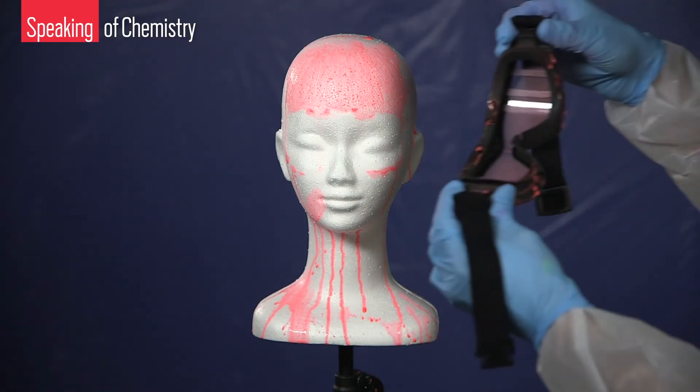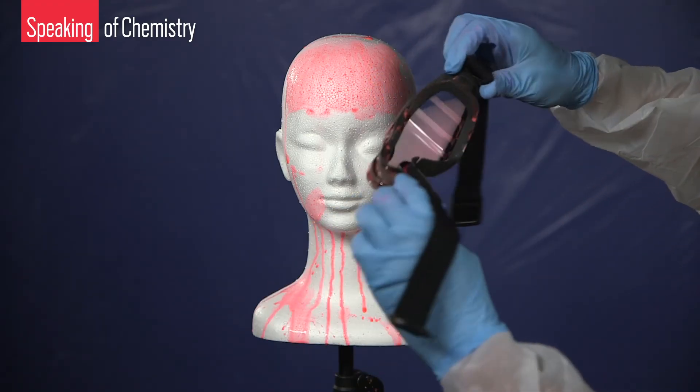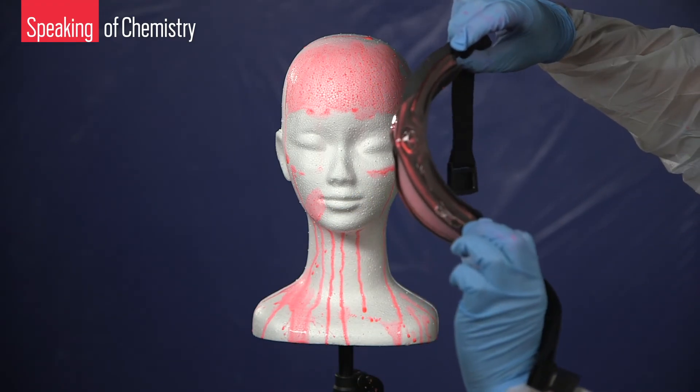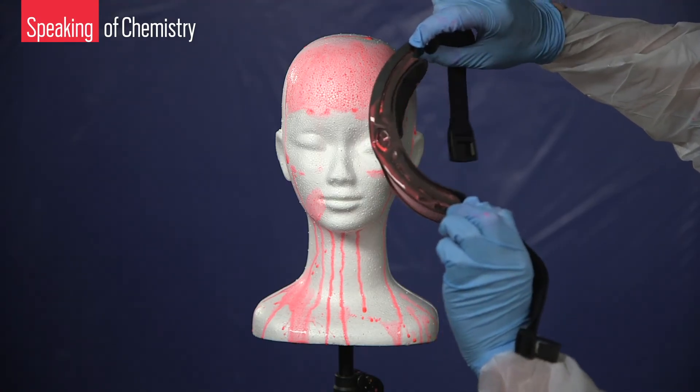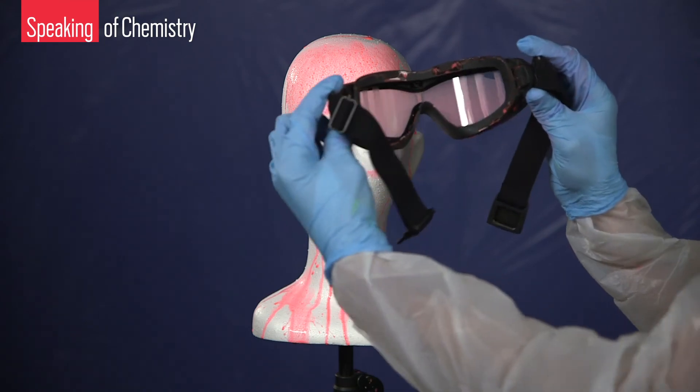As you can see, though, with this pair, a bit of paint did make it inside Polly's goggles. This is probably because Polly's head is a little smaller than average and covered in rigid polystyrene rather than skin. Once again, Polly shows us why it's important to have goggles that fit well.